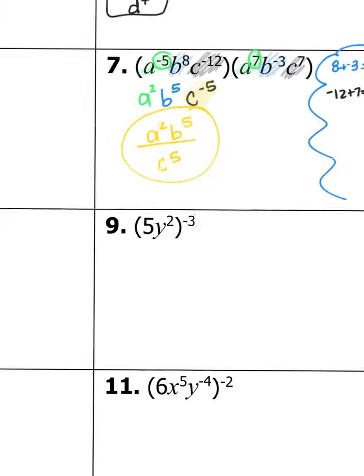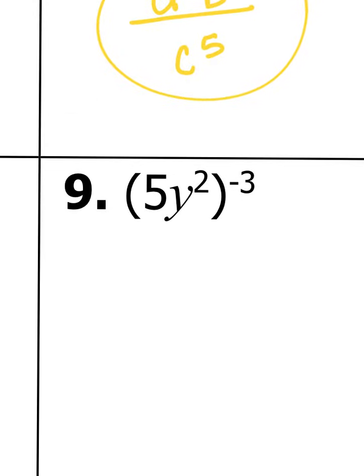Go ahead and try number 9 on your own. Same thing here — do the power rule. Do 5 to the negative third power, and then you have y squared to the negative third power. When you have a power raised to a power, you multiply your exponents. For the numeric piece, put that in your calculator, being sure to always use parentheses.